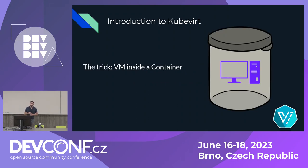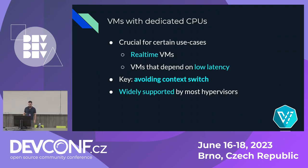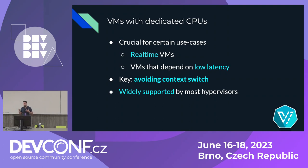The basic idea of KubeVirt's architecture is that we run a VM inside a container: inside the container we have a hypervisor running the guest, all wrapped inside a container. As for why we care about VMs with dedicated CPUs: it's crucial for use cases like real-time VMs or VMs that depend on low latency. The key point is that we need to avoid context-switching the guests. If you depend on very low latency, you don't want your guest to be context-switched out, because when you need to respond fast, there's an overhead from switching the guest back. This is widely supported by most regular hypervisors, and we want to bring it into Kubernetes.